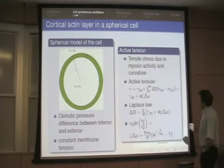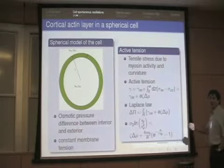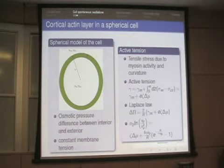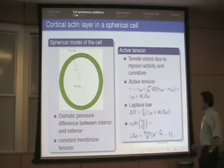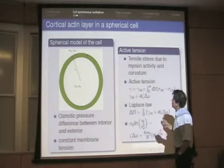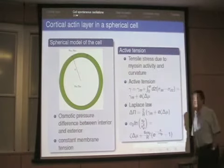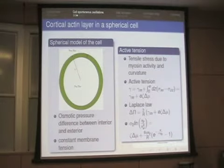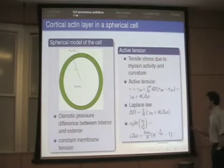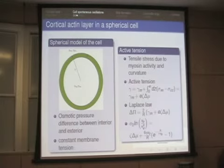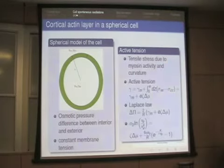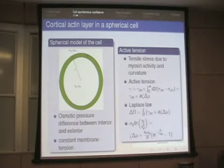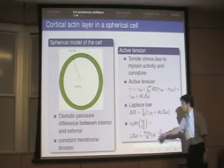The effective tension means the pressure difference between inside and outside the cell is given by Laplace's law: two over the radius times the effective tension. You apply Laplace's law but use the membrane tension plus the active tension. In this curved geometry, the thickness of the cortical layer is given by a formula showing that changing motor activity changes both the tension and the thickness.